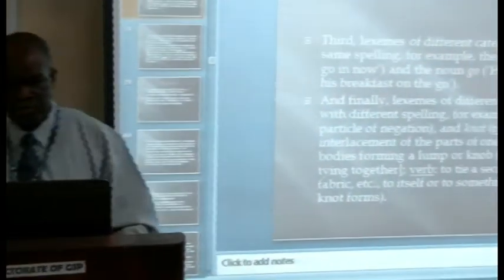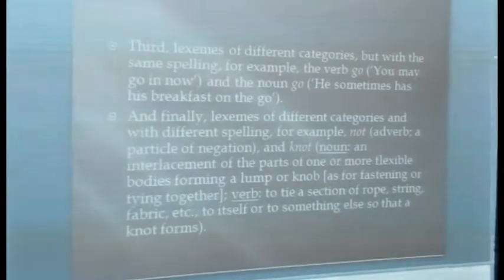Finally, there are words of different categories and with different spellings. Take the word 'not' spelled N-O-T, and 'knot' spelled K-N-O-T. These two words are pronounced the same — they are homonyms — but they have different meanings. 'Not' (N-O-T) is normally an adverb expressing negation, while 'knot' (K-N-O-T) can be used as a verb meaning to tie a section of rope, string, fabric, and so on.